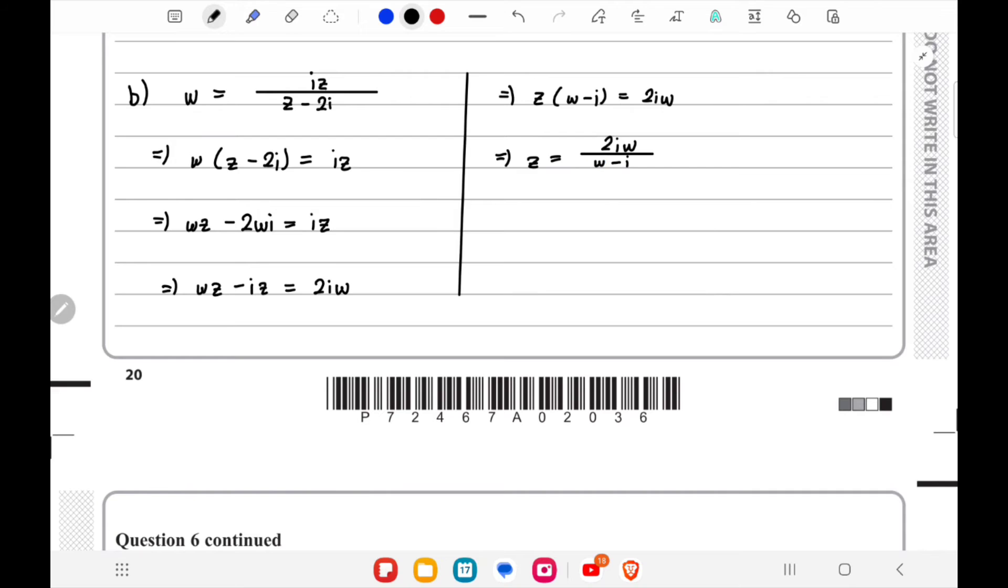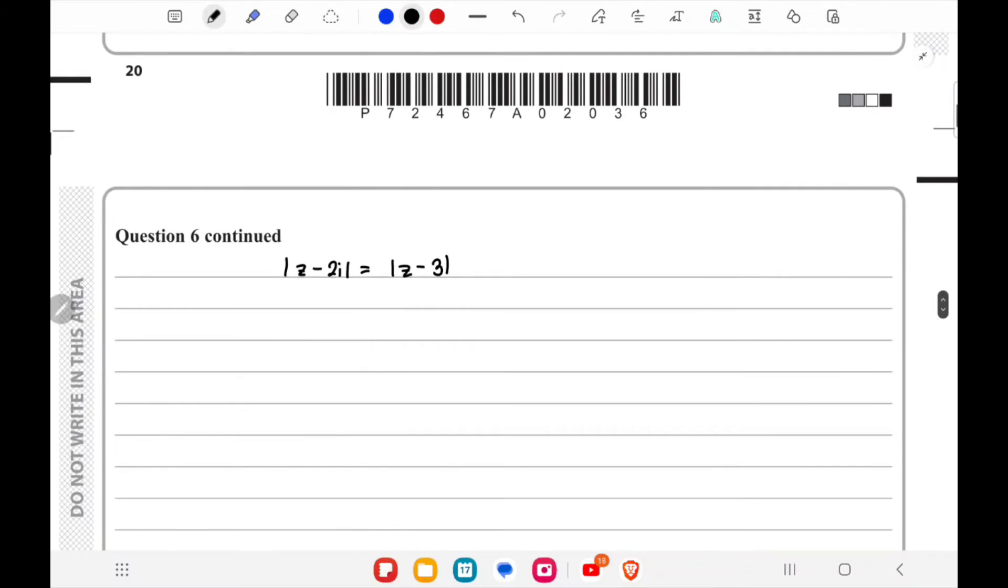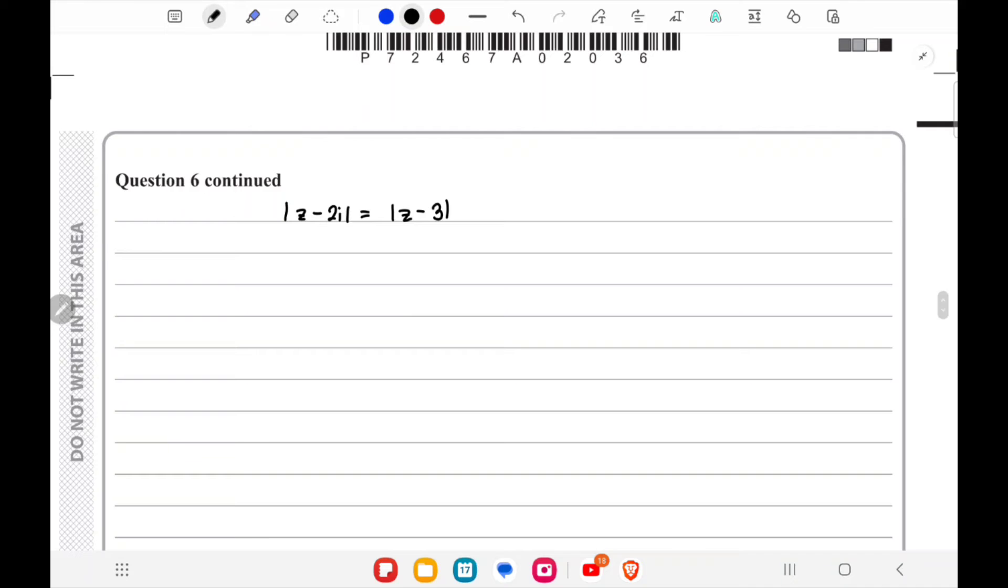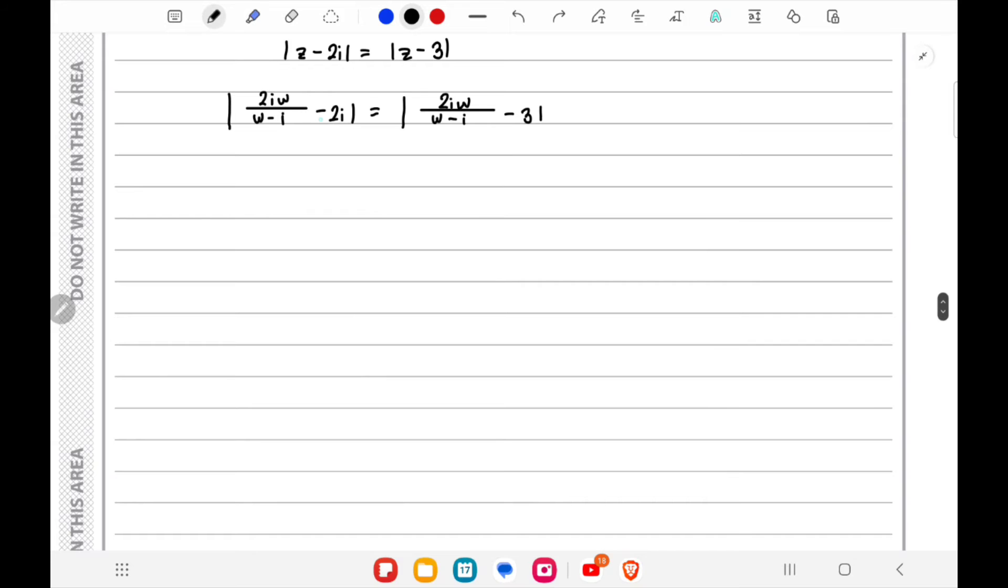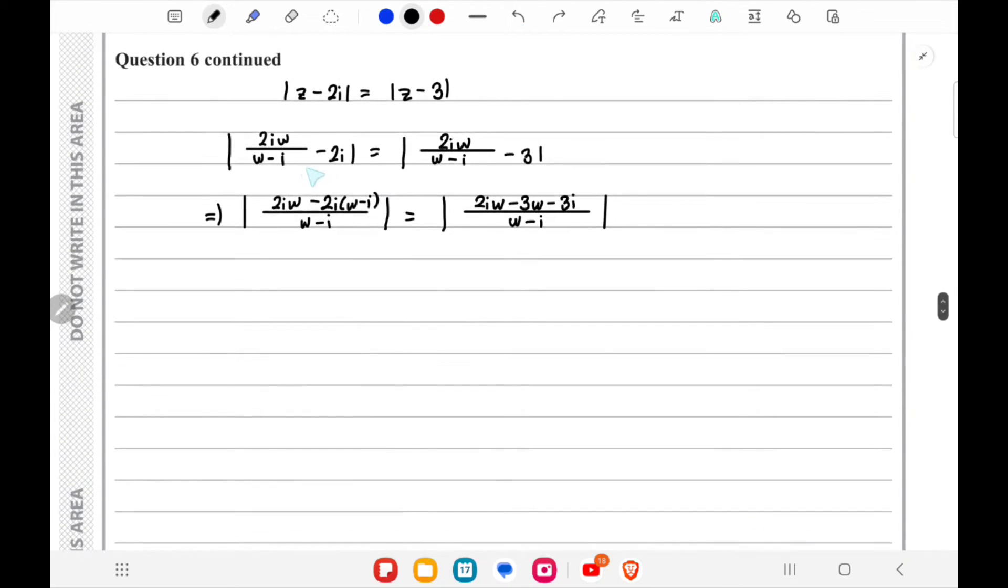This is the given equation in the z-plane, so we'll replace z in the form we just found. Write it as 2iw/(w-i), then take a common denominator on both sides with (w-i) as the denominator. After that, we'll just expand the brackets.